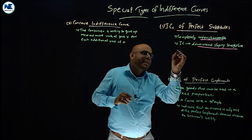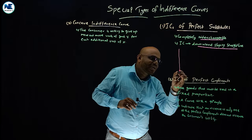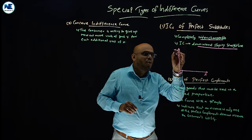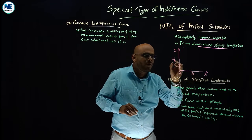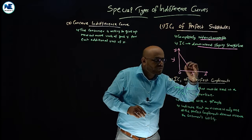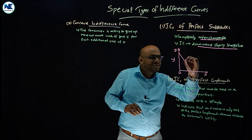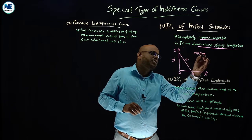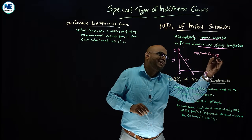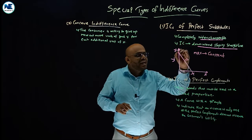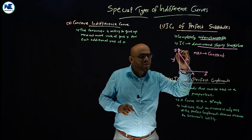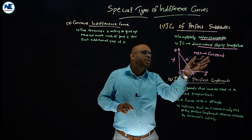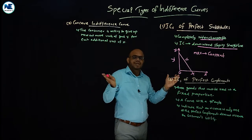For perfect substitutes, the indifference curve has a downward sloping shape. On the axes, OX represents product X and OY represents product Y. This is the indifference curve for perfect substitutes. Here, the Marginal Rate of Substitution is constant. The consumer can take either full Y or full X — perfect substitutes, or any combinations. The Marginal Rate of Substitution is constant.